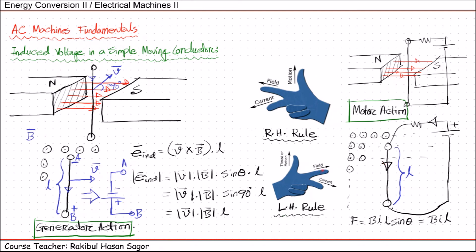The field direction will be denoted by the index finger, and then we'll be able to figure out the direction of the force. If we apply this left hand rule, we'll get the direction of the force. I hope this concept is clear — the generator action and the motor action, Fleming's right hand rule and left hand rule, how voltage is induced in a simple moving conductor placed under a magnetic field, and how you can get force from a current-carrying conductor placed under a magnetic field. We'll continue in the next class from here.